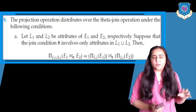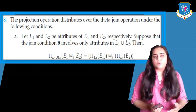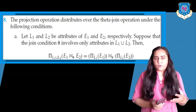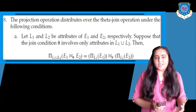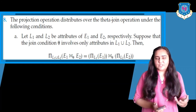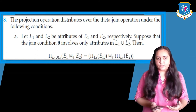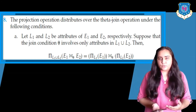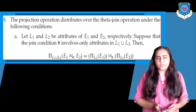On the left-hand side there is a pi operation: pi L1 union L2 on E1 theta join E2. This can be converted into pi L1 of E1 theta joined with pi L2 of E2 — meaning you extract all the columns you need from E1, extract all the columns you need from E2, and then take a theta join between the two. That is part A of rule eight.